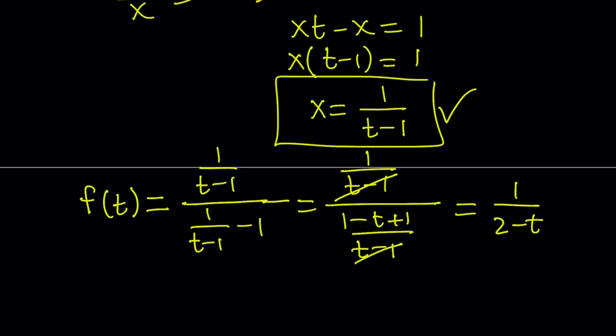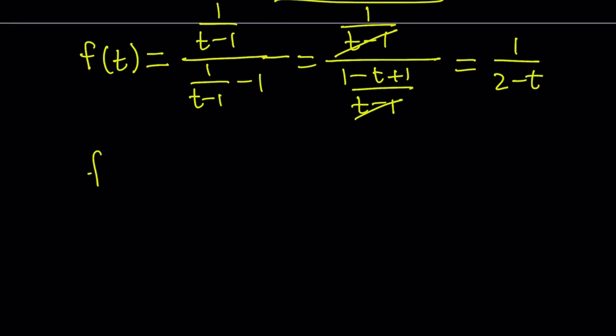Notice that this is f of t, so f of t is equal to 1 over 2 minus t. Now since we're looking for f of x, we want to express this in terms of x. Let's replace t with x and that's going to give us f of x equals 1 over 2 minus x.